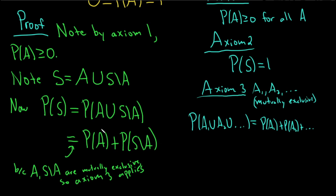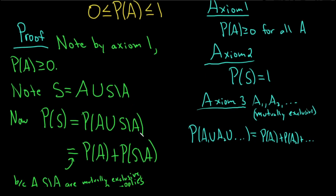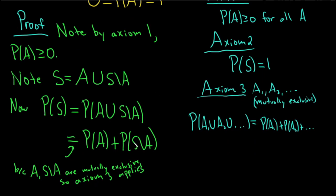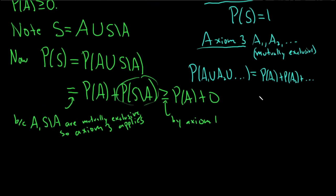And now what we're trying to do is we're trying to compare P of A to 1. So we need to get rid of this here. So this is greater than or equal to P of A plus 0. And this is by axiom 1. Because we can say this is greater than or equal to 0. So what do we have?